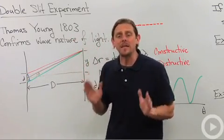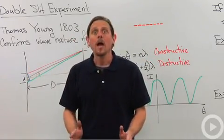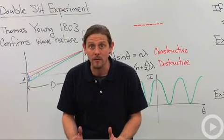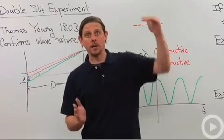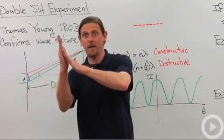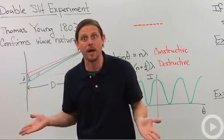If that difference in distance is exactly one wavelength, then that means that we'll have constructive interference because it'll just go an additional wavelength and then they'll both meet and they'll do the same thing.